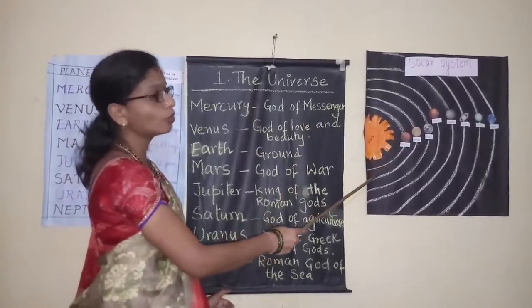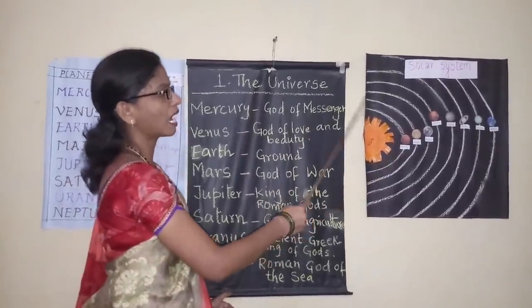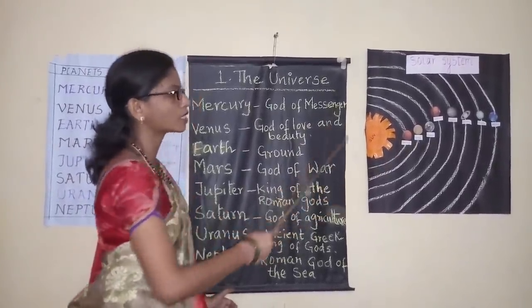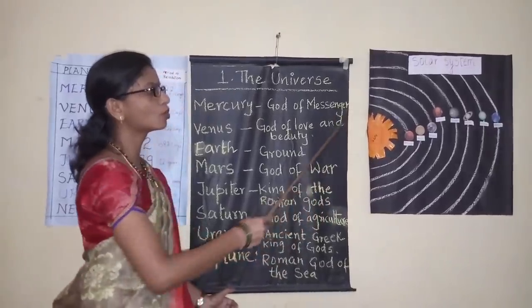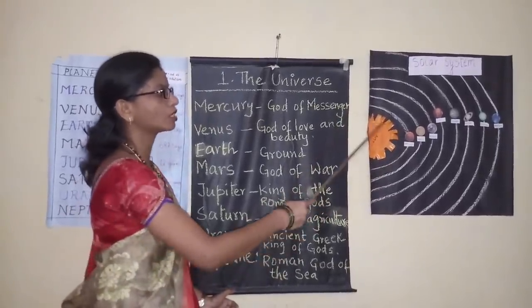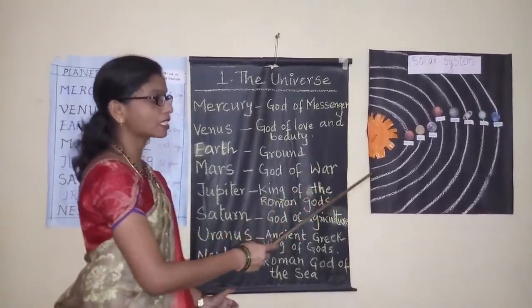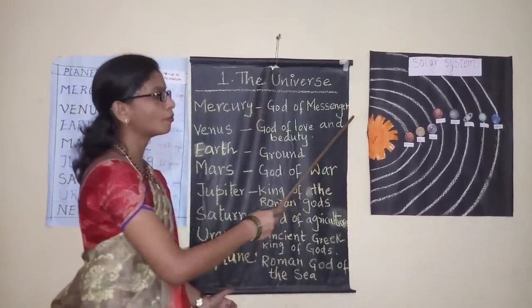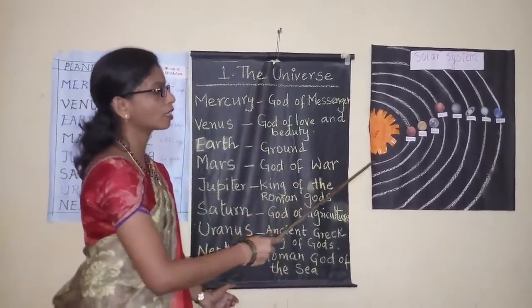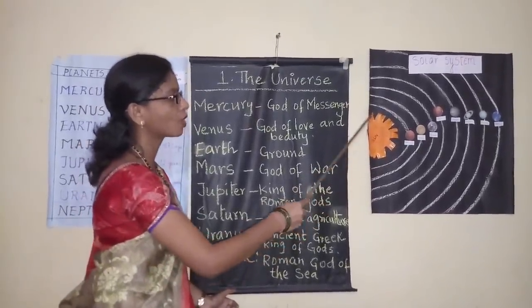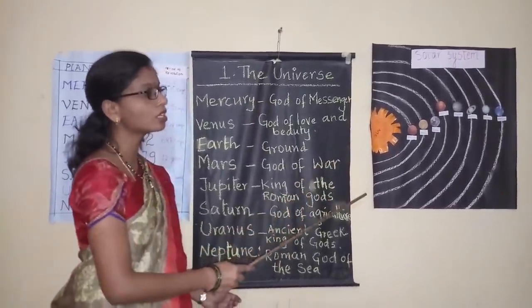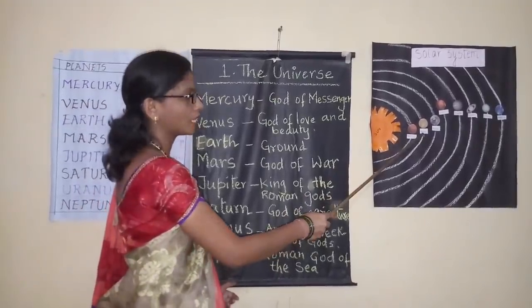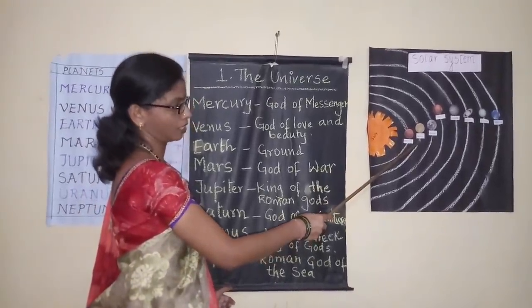All the planets move around the sun. Even Mercury also moves around the sun. It takes 88 days to complete one complete round around the sun. The second planet is Venus.